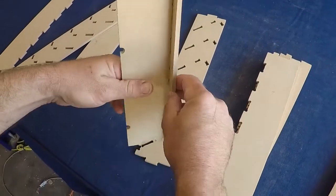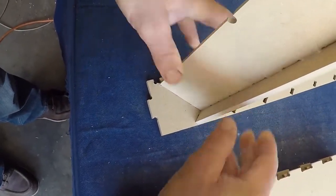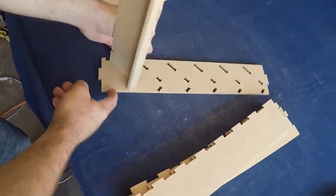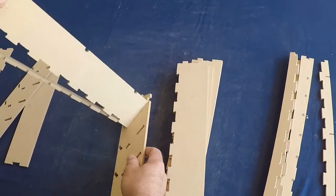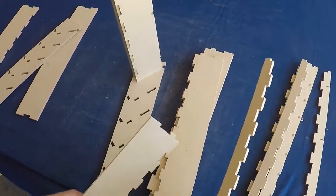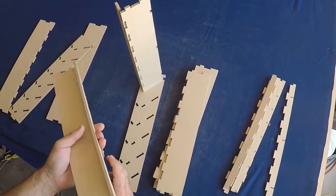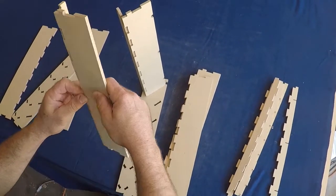We'll attach the lip and slide it into the notches on the side. Repeat this process putting on the front lip of the shelf and then inserting it into the notches on the side.